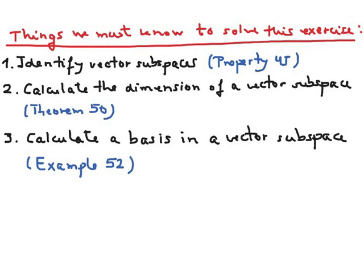To solve this exercise you must know how to identify vector subspaces, which you can find in property 45 in the unit 1 tutorial. You must know how to calculate the dimension of a vector subspace, found in theorem 50, and how to calculate a basis in a vector subspace, shown in example 52 in the tutorial.